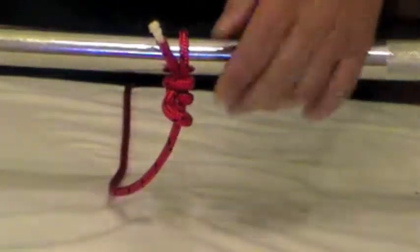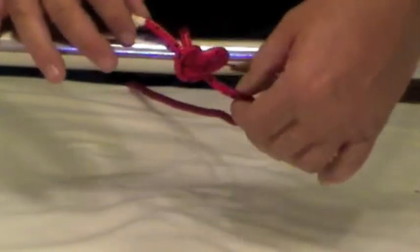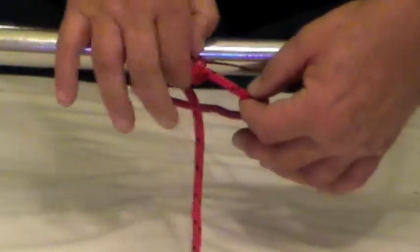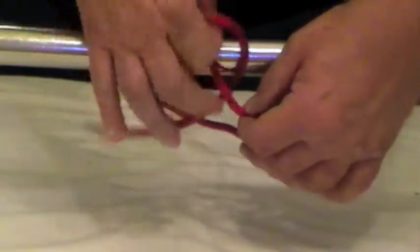That'll just stay tight. There it is there, if you can see that. I'm just going to pull on that, and the knot will come undone. That's a slip buntline hitch.